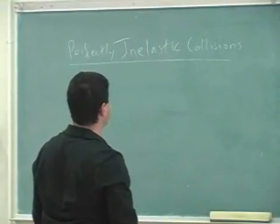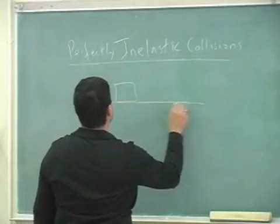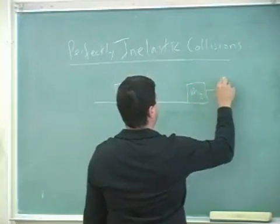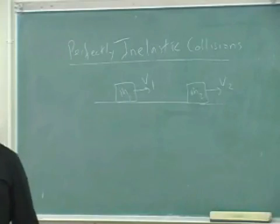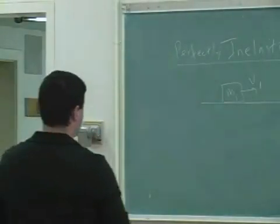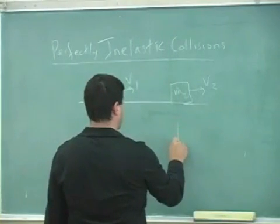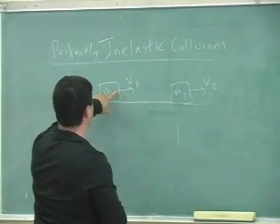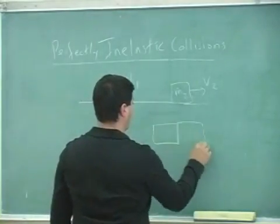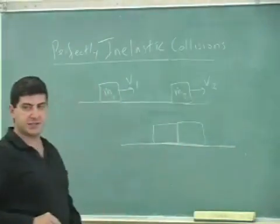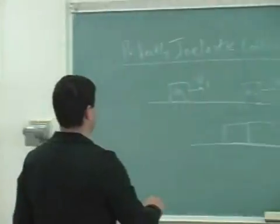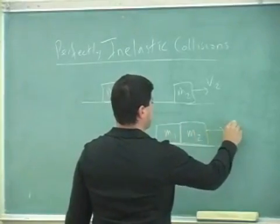An inelastic collision is one where an object comes and hits another object and they get stuck to each other — maybe there's Velcro, glue, or magnets. For example, this could be the south pole of a magnet and this the north pole, and they get stuck. After the collision they become one object — one system — with some final velocity.